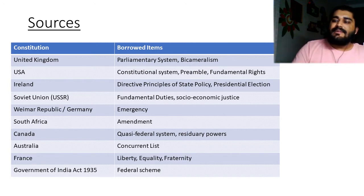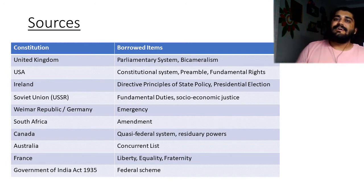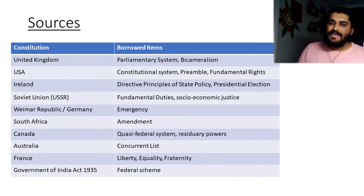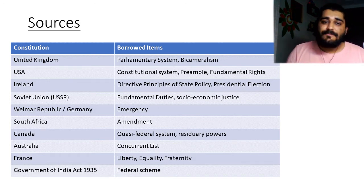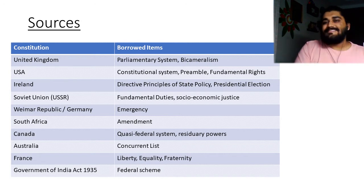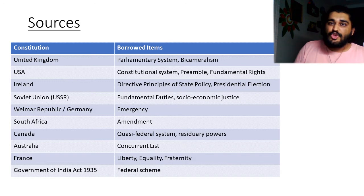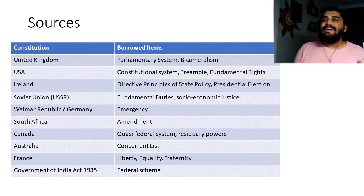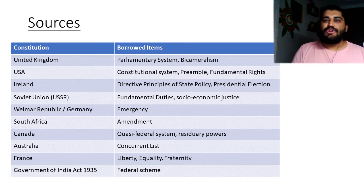Apart from the fundamental rights, there are also directive principles of state policy in the constitution. These are guidelines to the government about how they should function and how their policy should be. The idea behind directive principles of state policy is something that we took from Ireland. Something else that we took from Ireland is the presidential election; however, the impeachment of the president we took from the US. So you can see that the drafters of the Constituent Assembly identified different ideas and mixed and matched whatever they thought worked best for India.